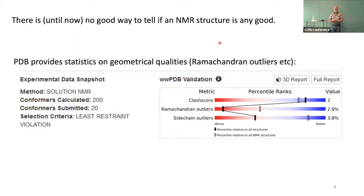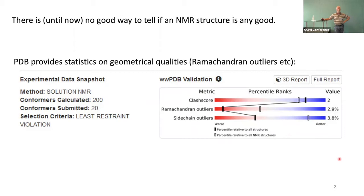Why would we ever want to do that? Because it's actually very hard to tell if an NMR structure is correct or not. If you go to PDB and look up an NMR structure, you will see a graphic that tells you something about how good the structure is — it gives clash score (do the atoms bump into each other), Ramachandran outliers, sidechain outliers. This is a measure of geometrical quality. It tells you whether the structure looks like a nice protein, but it doesn't tell you if it's correct.